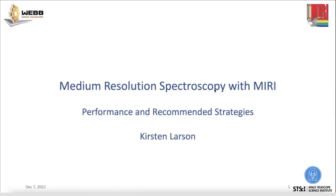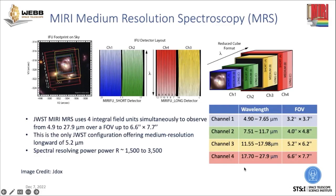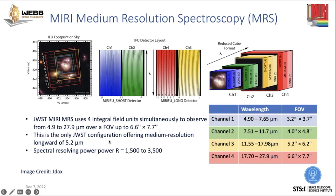Medium resolution spectroscopy, or MRS with MIRI, uses four integral field units and simultaneously observes spectra over a range of approximately 5 microns to 28 microns, and up to a field of view of 6.6 arc seconds by 7.7 arc seconds. This is the only JWST configuration that offers medium resolution spectroscopy longward of 5.2 microns.